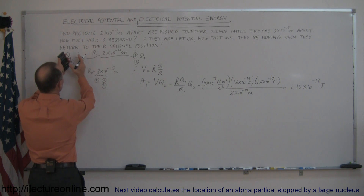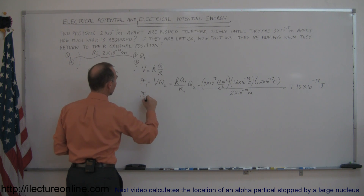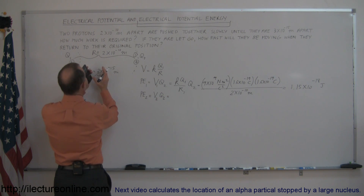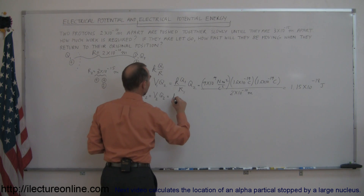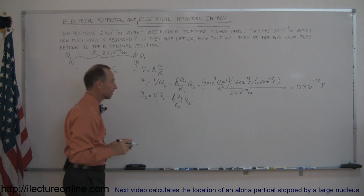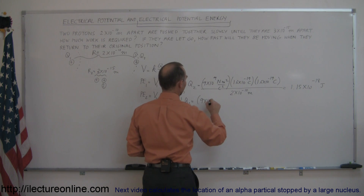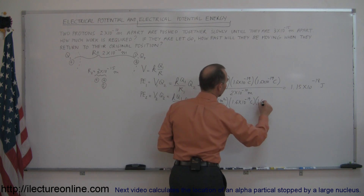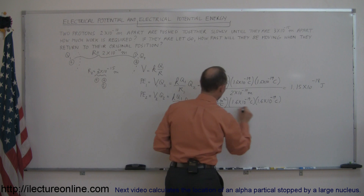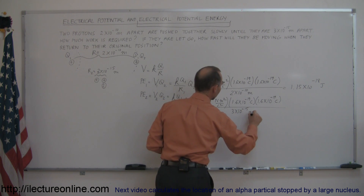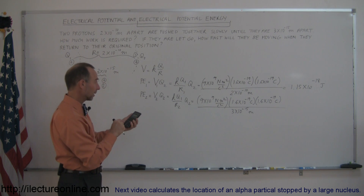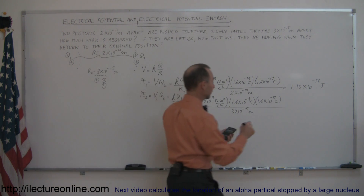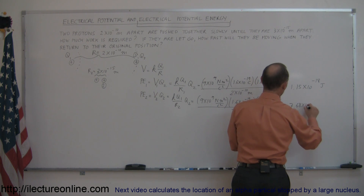Now, what will be the potential energy of the system when the two protons are this close together? That would be PE2, which equals K times Q1 over R2 times Q2. We get the exact same equation but with a much smaller distance: 9 times 10 to the 9th, times 1.6 times 10 to the minus 19 coulombs, times 1.6 times 10 to the minus 19 coulombs, divided by 3 times 10 to the minus 15 meters. That gives us a potential energy of 7.68 times 10 to the minus 14 joules.